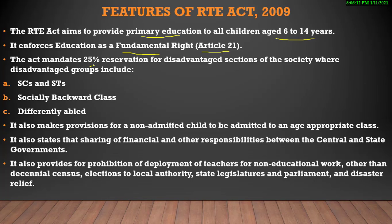ये mandate करता है 25% reservation — जितने भी disadvantaged sections हैं हमारे country में, like SC, ST, socially backward, differently abled — इन सब को free and compulsory education मिले. और हर private/public school में 25% reservation इनके लिए compulsory हो गया है.